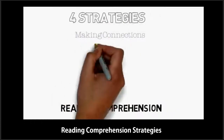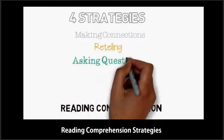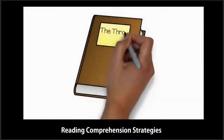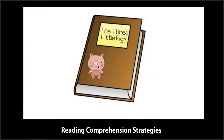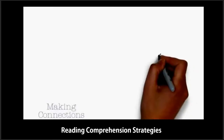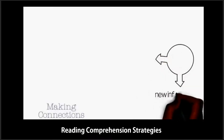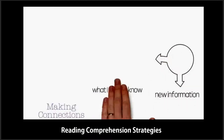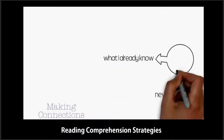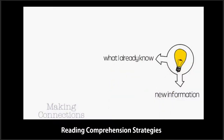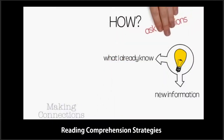To make these important strategies more concrete, let's look at how we could use them when reading The Three Little Pigs with a student. Making connections: when good readers make connections, they hook new information from a text to information they already know. When this happens, learning and understanding take place. When you are working with an emerging reader, you can ask them specific questions throughout the book to help them make these connections. Eventually, they will learn to do this automatically.